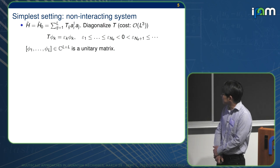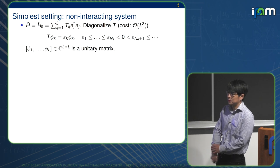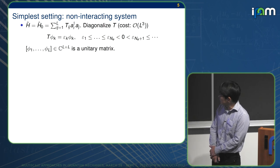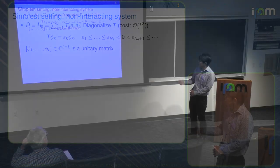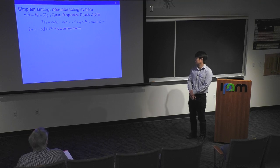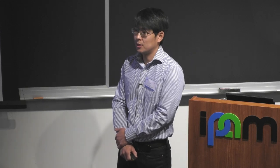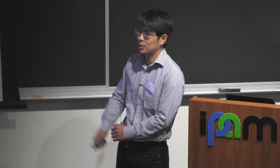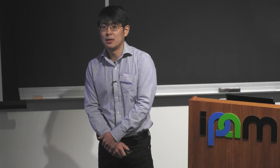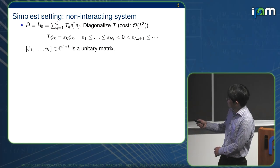The simplest setting is called non-interacting system, which means you don't have the quartic part. In this case, you can just diagonalize the coefficient matrix T. This can be done very efficiently, we'll call it order L cube. I want to say that efficient is relative to solving the interacting system. In workshop three, there will be large-scale DFT calculations. The whole point is to reduce the cost of this order L cube, but since we're talking in this correlated setup, L cube is considered to be cheap.